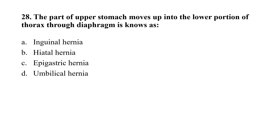Question number 28: The part of the upper stomach which moves into the lower portion of the thorax through the diaphragm is known as — option A: inguinal hernia; option B: hiatal hernia; option C: epigastric hernia; option D: umbilical hernia. The correct option is B, that is hiatal hernia.